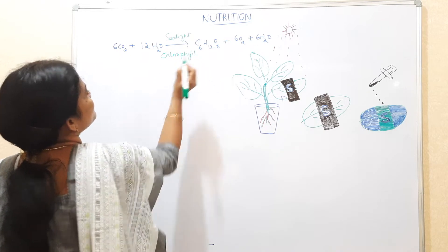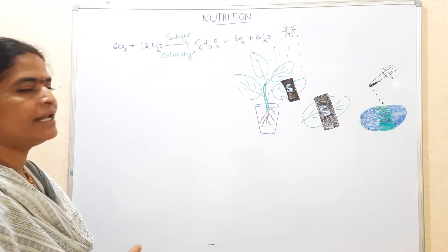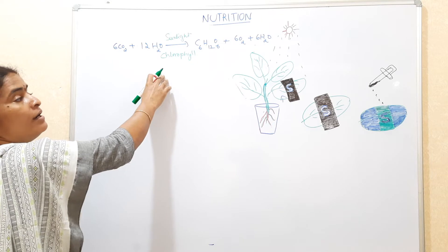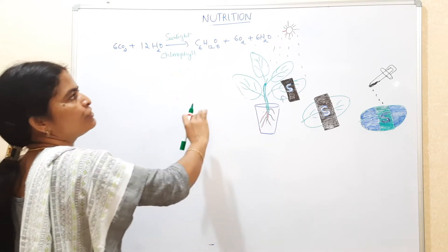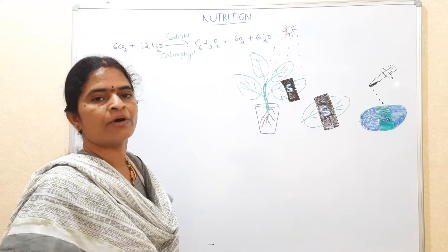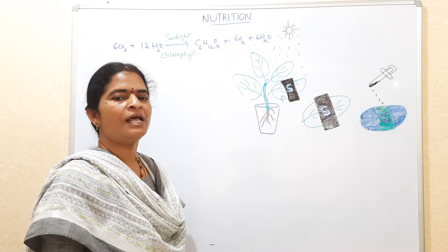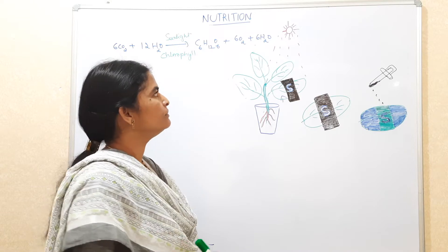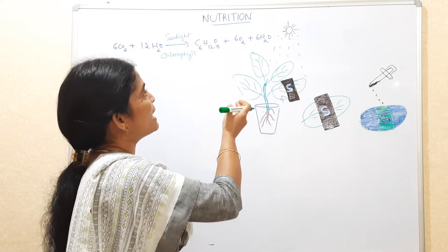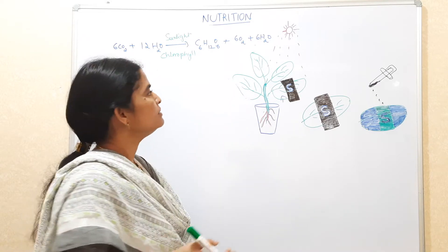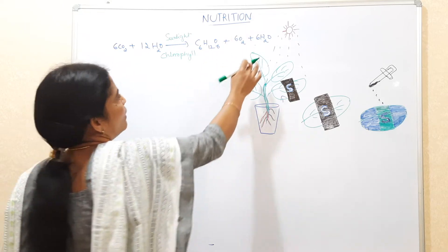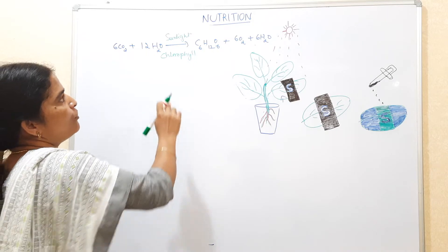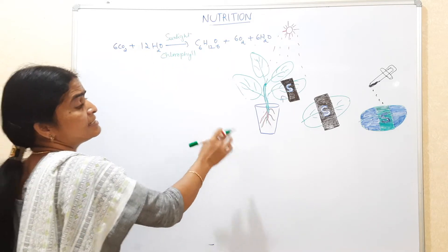Chlorophyll is present in the chloroplast and can absorb and capture sunlight. These four components are required to perform photosynthesis to produce glucose, an organic molecule. Later it will turn into starch, which is stored in various organs, and oxygen is evolved while water is also released.